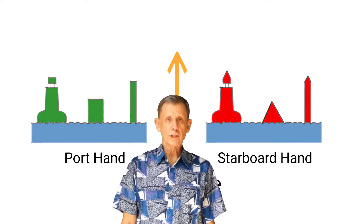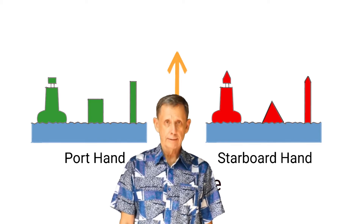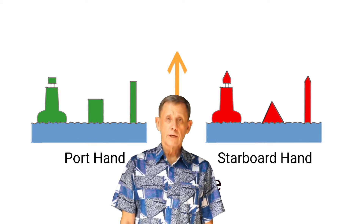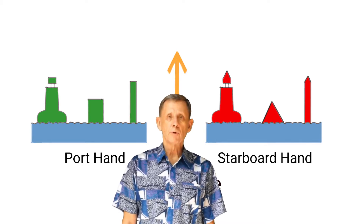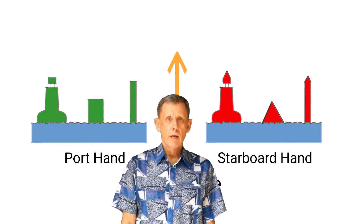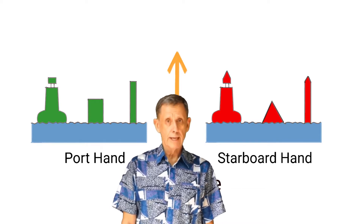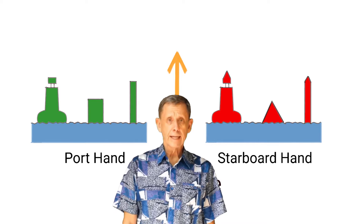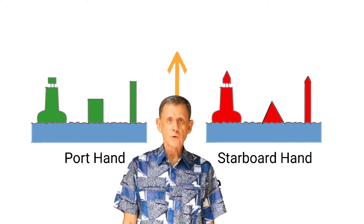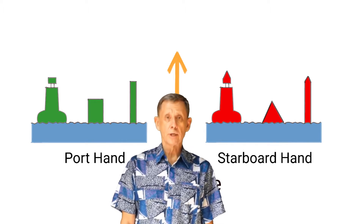The memory aid for which color beacon is which is RRR, or Red Right Returning. Because a flood tide will flow into an enclosed harbor, if you're returning into an enclosed harbor, you keep a red beacon on your right — Red Right Returning. But it's just a memory aid to help you remember that red lateral beacons are starboard hand beacons. Not all beacons are located at the entrances to enclosed harbors, and we'll look at some confusing examples. But first, let's look at some other characteristics of these buoys and beacons.